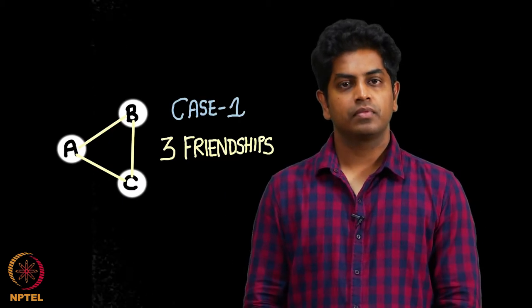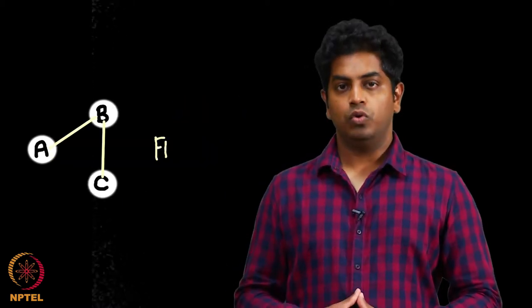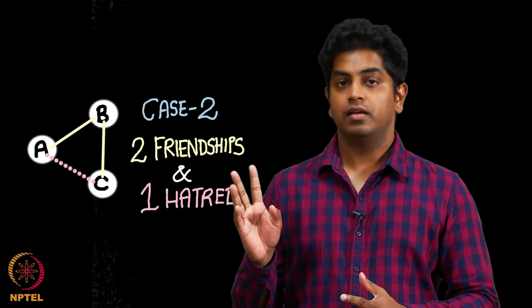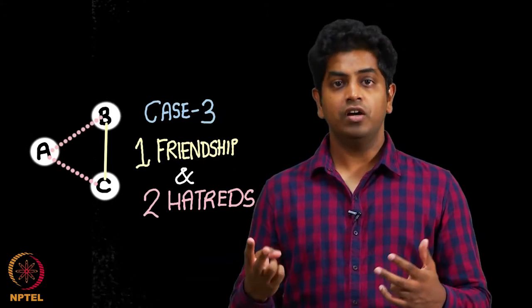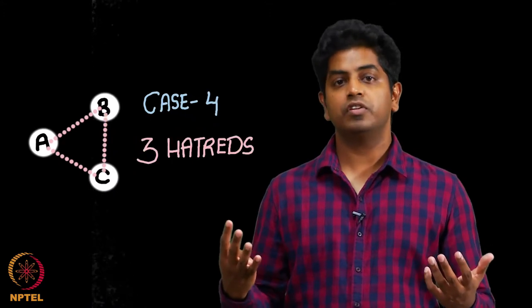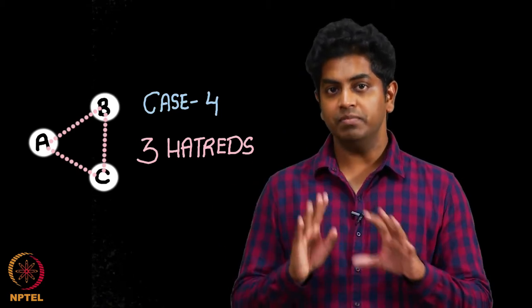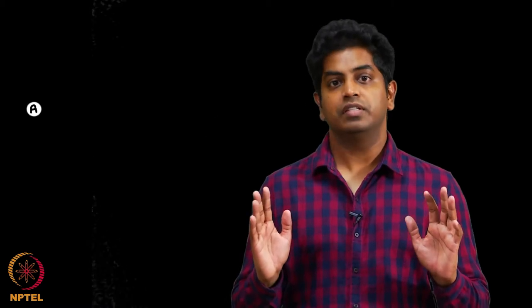I will now make an attempt to enumerate all possible cases. What do I mean by all possible cases? You see there are three people A, B and C. Between A, B and C what all are possible? Three friendships are possible, three friendships are possible as you can see. Case one. Case two, two friendships and one hatred. This is case two. For the next case as you can guess, two hatred, one friendship. The fourth case is all three hatreds right. Let us take this one at a time and then observe what are the consequences of these cases.